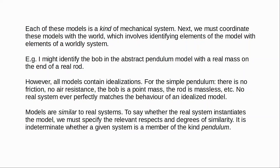Broadly speaking then, a theoretical kind is a kind defined by an idealised model. These models may be more or less similar to systems in the world, but they also deviate — sometimes very radically — from the worldly systems. The real system only ever approximates the behaviour of the model in certain respects and may have radically different properties in other respects. So a simple pendulum model assumes no air resistance, that the bob is a point mass, that the cord is massless — the real system deviates from these assumptions quite radically. The theoretical kind doesn't correspond in any straightforward sense with things in the world, and our classification of theoretical kinds doesn't, in any straightforward sense, track natural kinds.